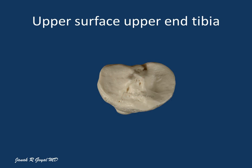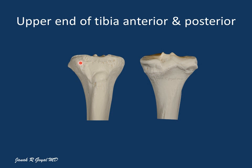The upper end of tibia is divided into the medial and lateral condyle. The upper surface of the condyle is separated by an intercondylar area which is narrow centrally and wider anteriorly and posteriorly. Lateral and medial intercondylar tubercles project from the narrow central part of the intercondylar area forming an intercondylar eminence. The intercondylar area gives attachment to the cruciate ligaments and the horns of menisci. Gerdy's tubercle is a prominence on the lateral side of the anterior margin of the lateral condyle of tibia which gives attachment to the iliotibial band.